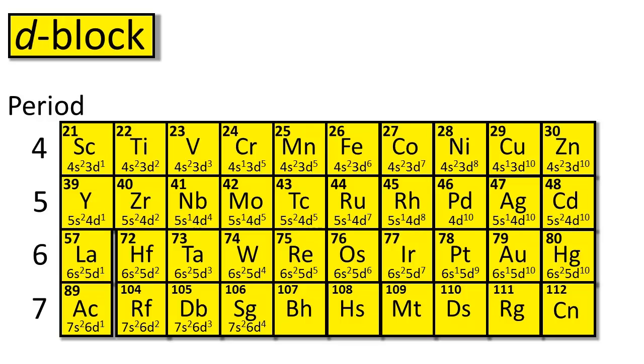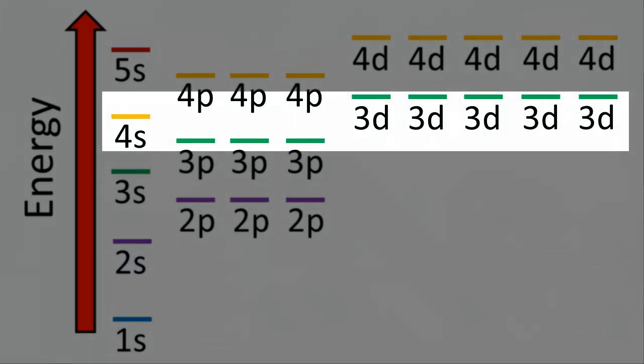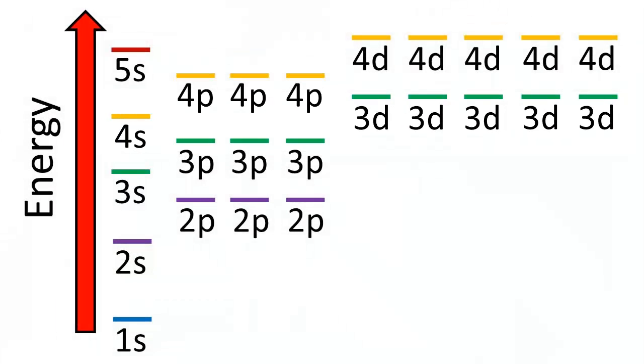Now let's move on to the d-block elements, which are the transition metals. This is where electron configurations start to become a little bit unpredictable. Since the 4s orbital is lower in energy than the 3d orbital, the 4s orbital generally fills up completely before the 3d orbitals start to fill. But these orbitals are so close in energy that in some cases an electron can minimize its energy by populating a 3d orbital before a 4s orbital.